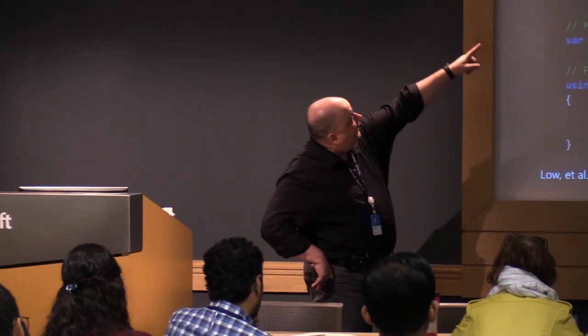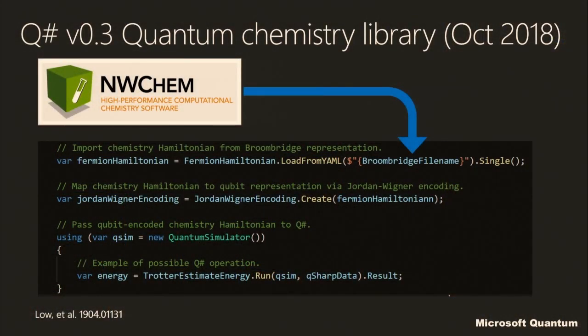What we did is team up with Pacific Northwest National Labs, which have the product NWChem — a high-powered quantum chemistry tool. We integrate all of the wonderful modeling in that tool and bring it into the QDK so that we can simulate directly, and not have to go through the human-intensive step of converting all the various pieces to the right form to put into simulators.